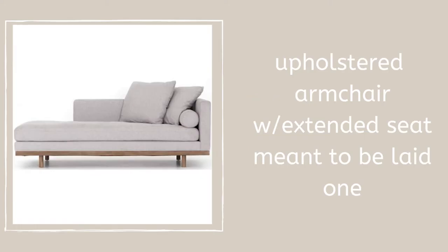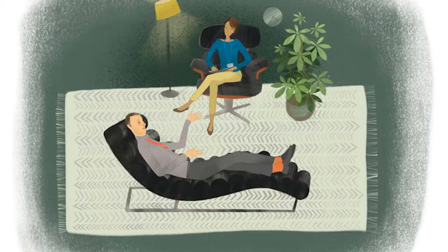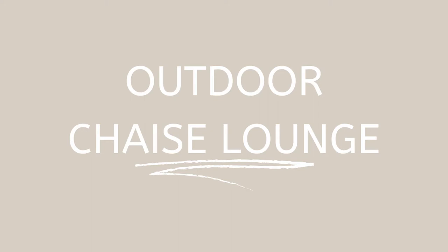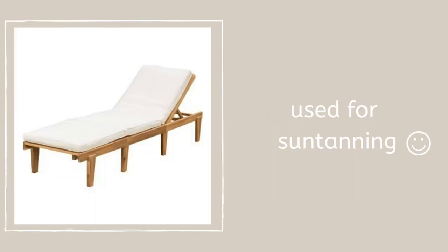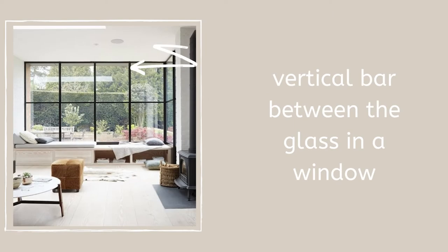The chaise lounge is meant to be laid on, and many people use this during therapy sessions so they can just lay down and comfortably talk. An outdoor chaise lounge is used for sun tanning and they are always by the pool. A mullion is a vertical bar between the glass in a window.